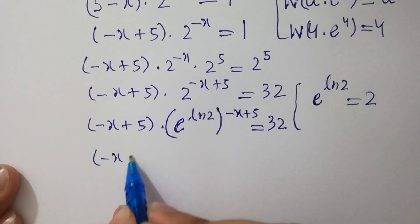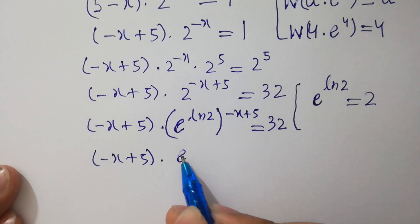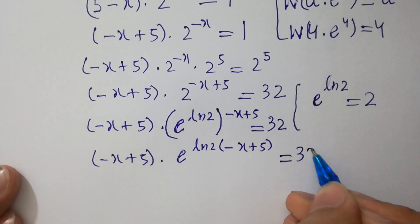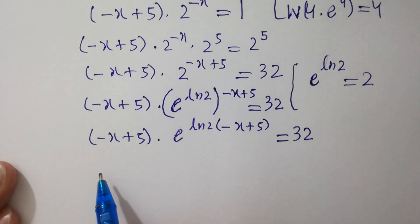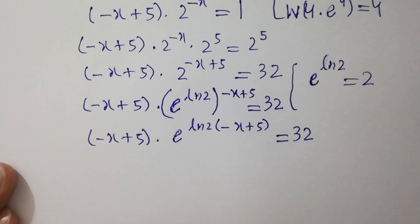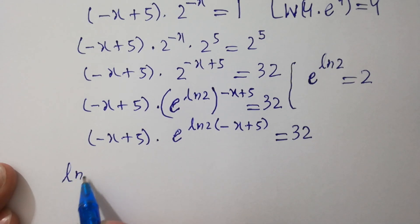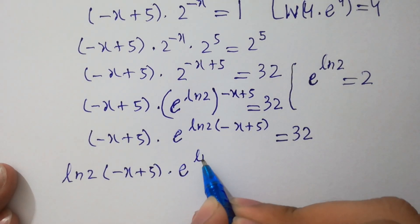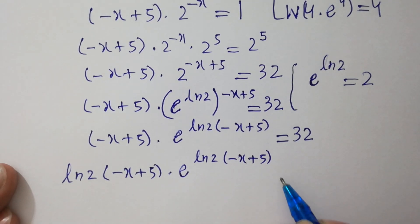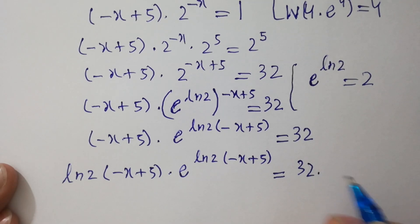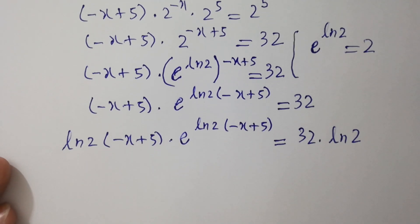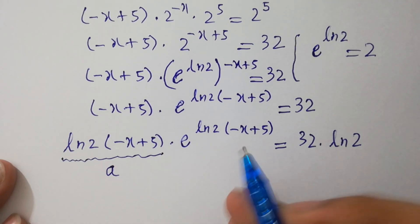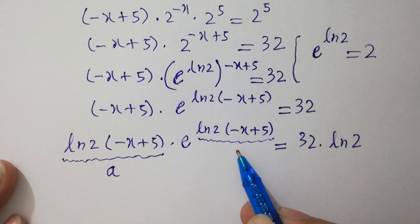Multiplying by natural log 2 on both sides gives us: (log 2 times (minus x plus 5)) times e to the power (log 2 times (minus x plus 5)) equals 32 times natural log 2. You can see that (log 2 times (minus x plus 5)) plays the role of a in the expression a times e to the power a.